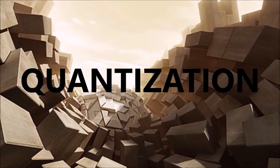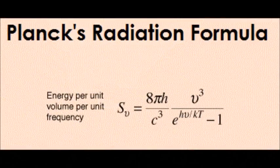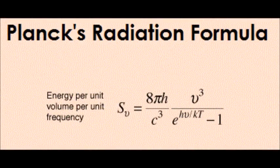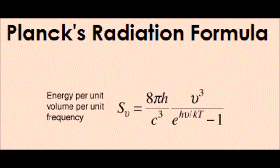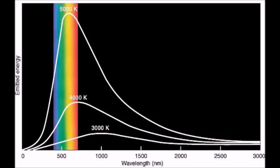Once Planck had made his assumption, he was able to derive an equation that accurately modeled the distribution of blackbody radiation intensity as a function of temperature and frequency. He'd at long last found a solution to the problem that he'd labored over, and he eventually got a Nobel Prize for doing so.